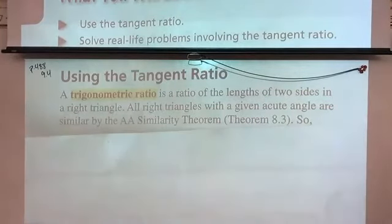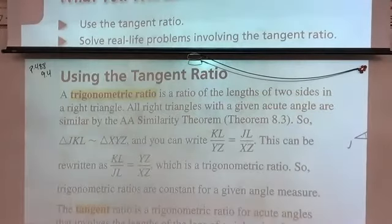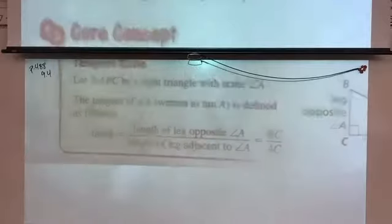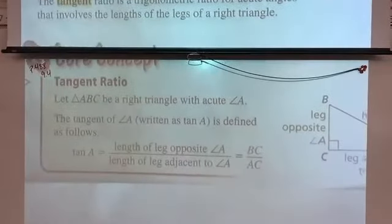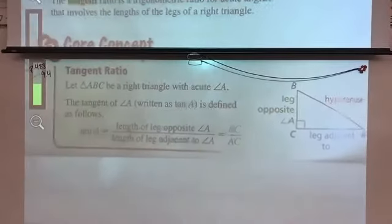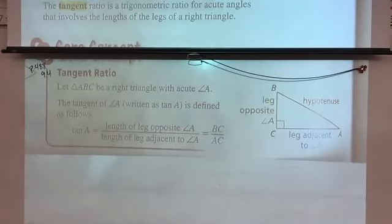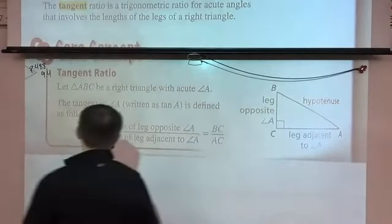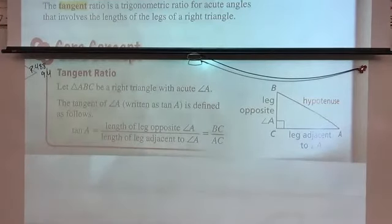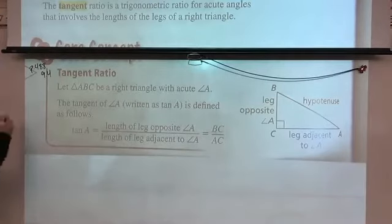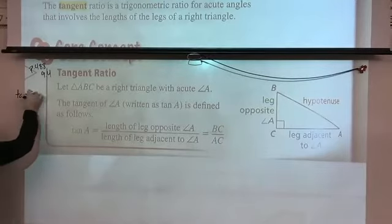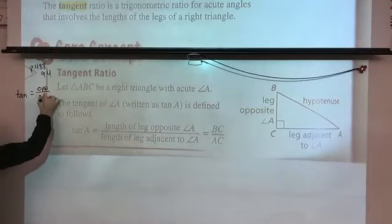The trig ratio we have today is called the tangent ratio. It's not a theorem but it is a core concept. The tangent ratio is defined as the ratio of the opposite leg over the adjacent leg: tangent equals opposite over adjacent. We abbreviate tangent as T-A-N.